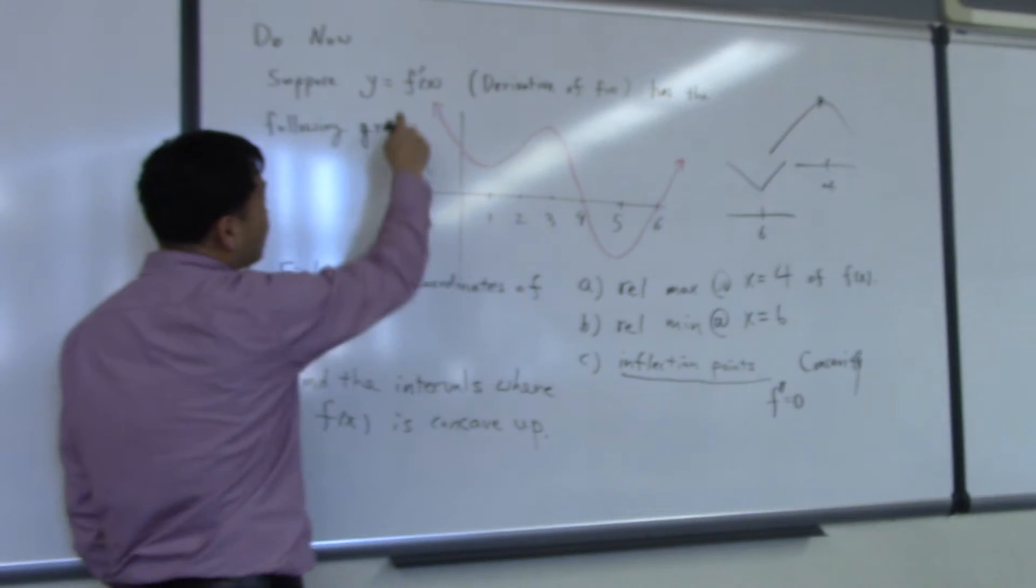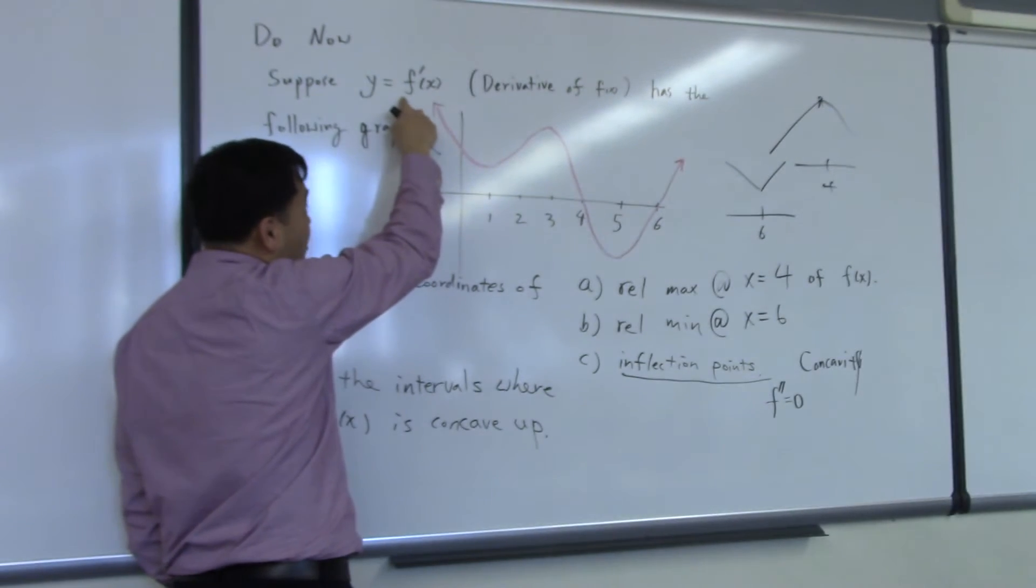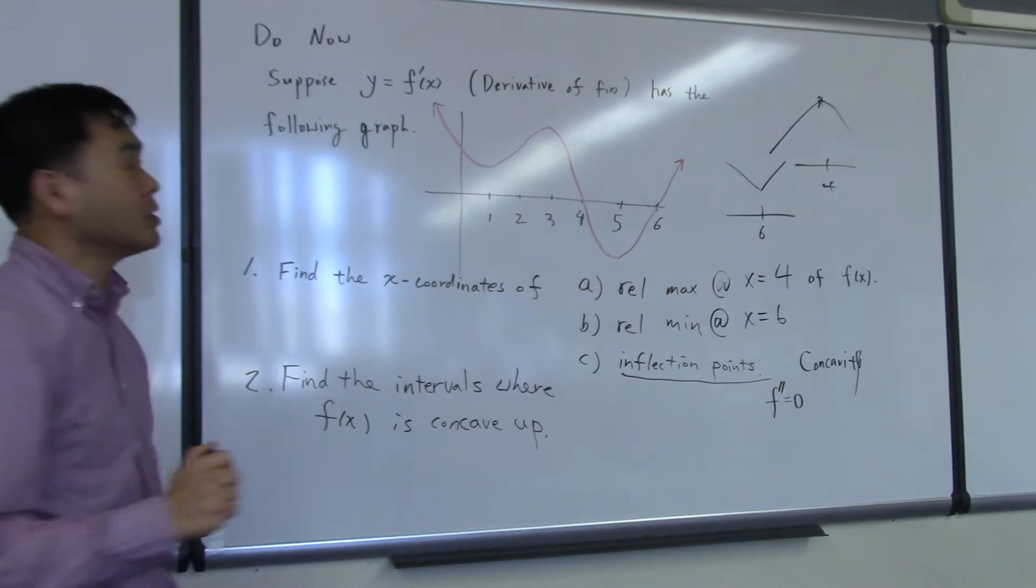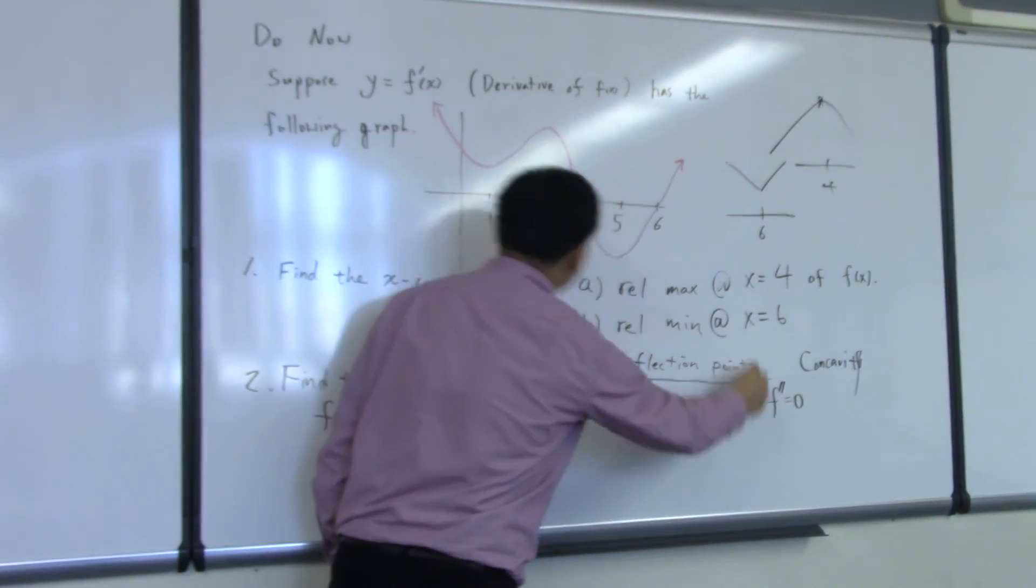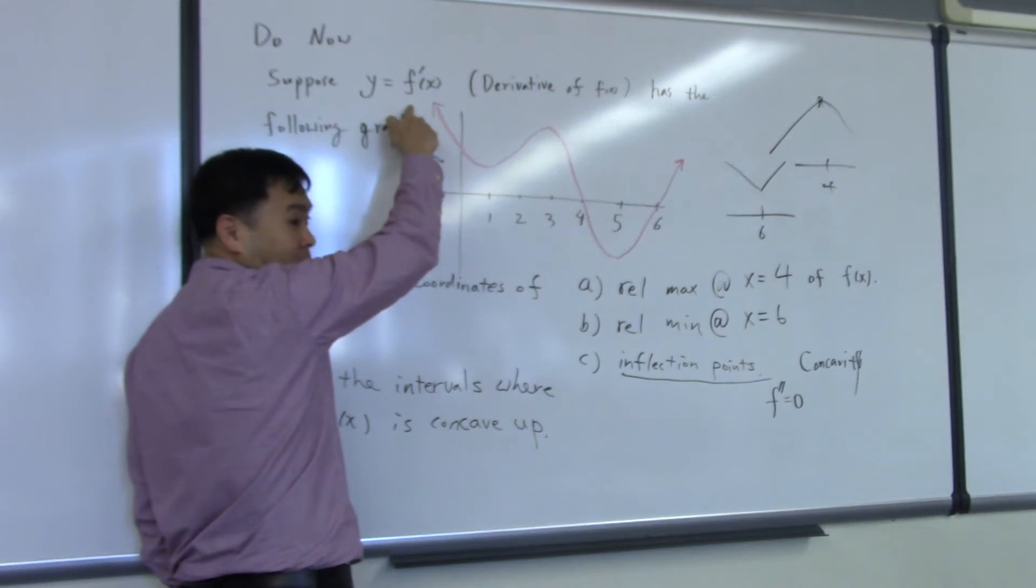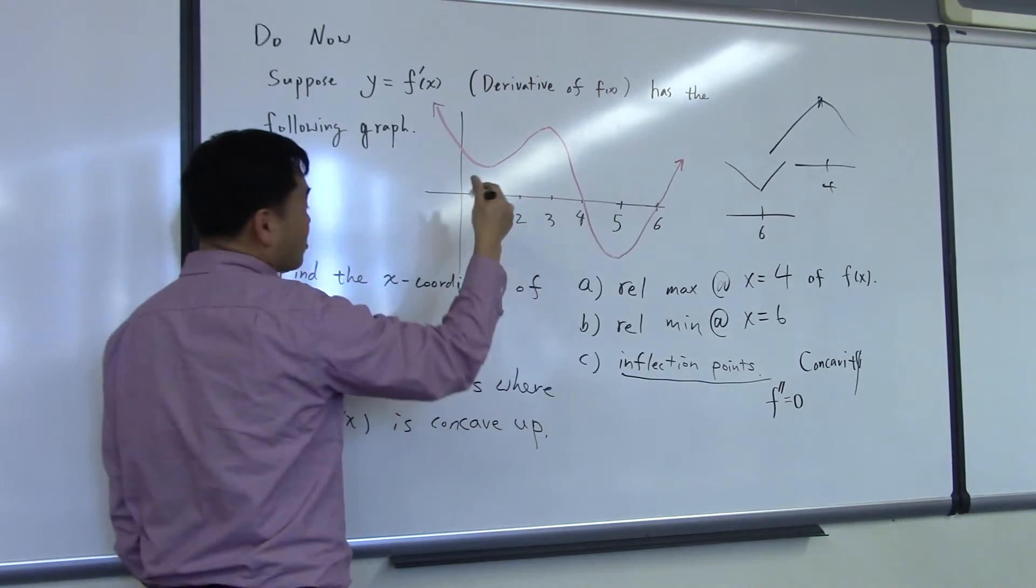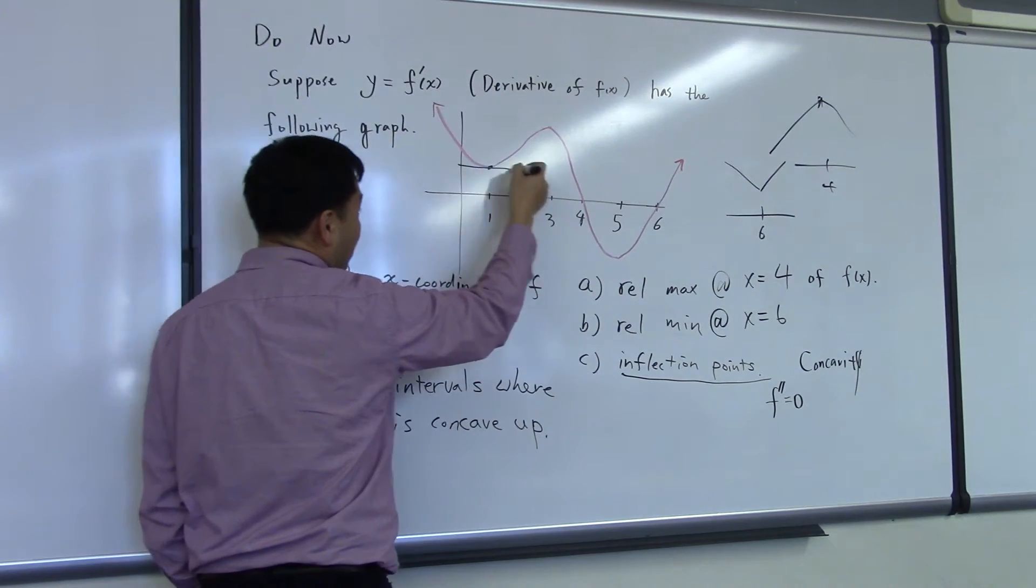And since this is a graph of f prime, what does it mean for f double prime to be 0? f double prime is the slope of the graph of f prime, so you're saying the slope is equal to 0. In other words, you're looking for places where you have a horizontal tangent.